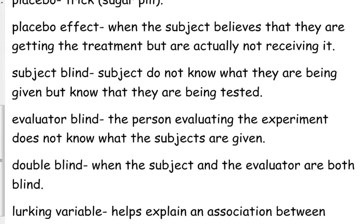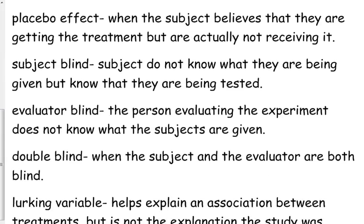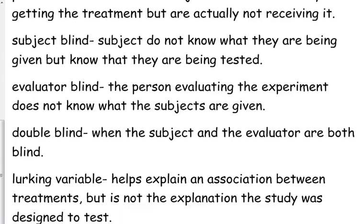Blindness is important. Subject blind means that the subject doesn't know what they're getting. Evaluator blind means that the evaluator doesn't know what the patient is getting. Double blind means neither one of them knows what is being given in the experiment. Lurking variables are very important — it could be an explanation for why a certain result occurs, but it's not the actual explanation that the study was designed to test.